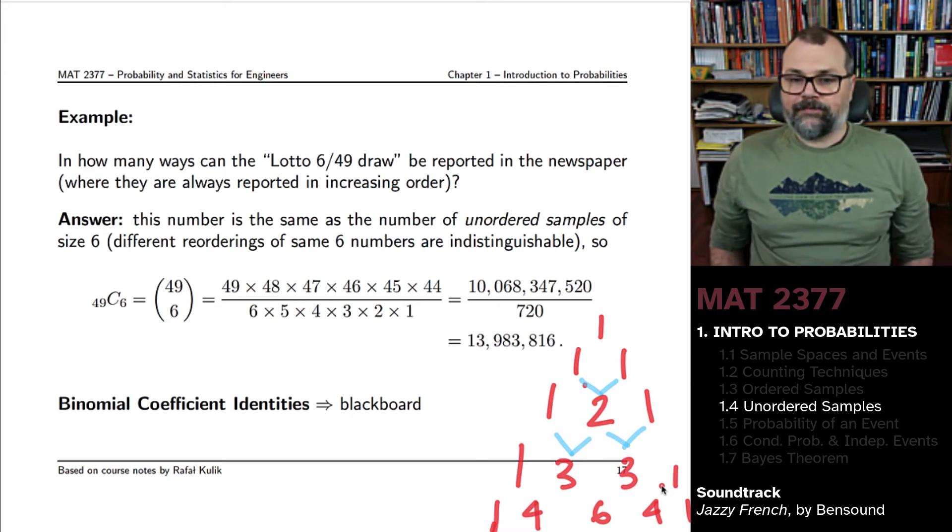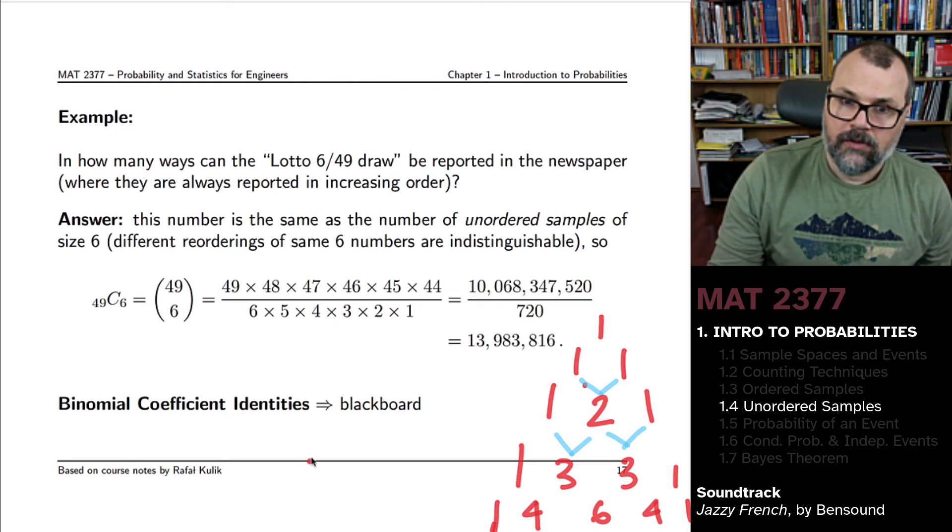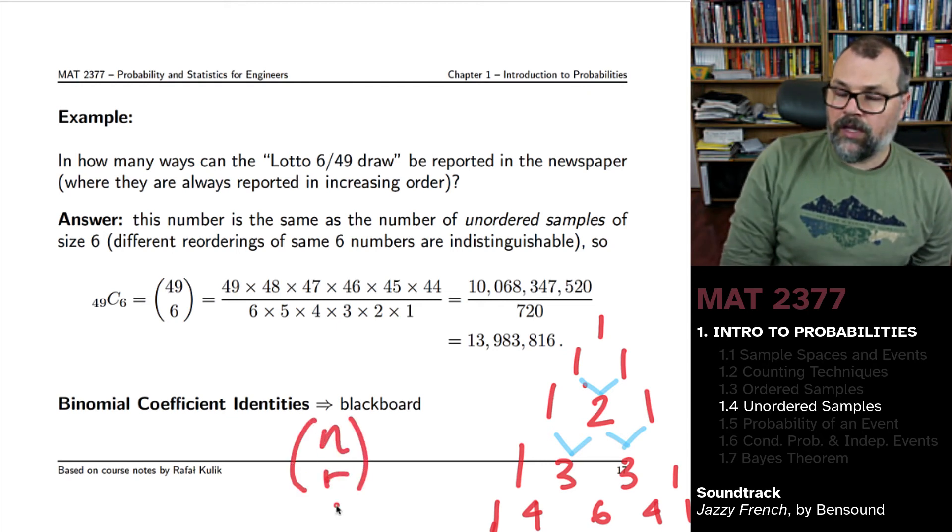And then you look at the sum of one plus two and the sum of two plus one and so forth. So you can build this. This is literally going to be how you compute n choose r.